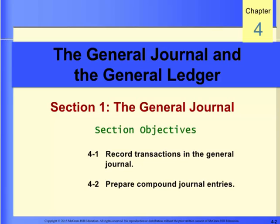Chapter 4 introduces the general journal and the general ledger, and shows how to use both. In the real world, transactions are not recorded using the accounting equation, nor are they recorded using T-accounts. Instead, businesses use a journal to record business transactions. The first objective of this chapter introduces the general journal.